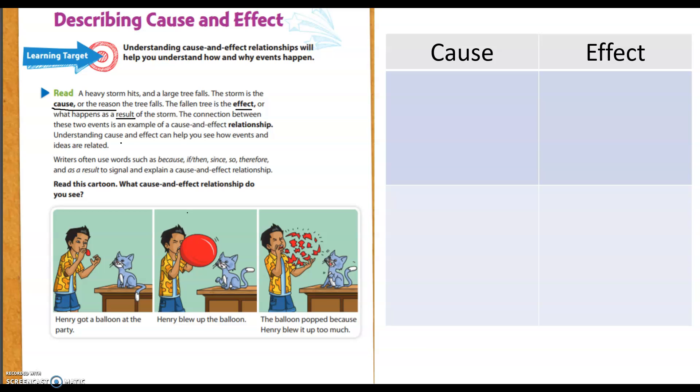Writers often use words such as because, if, then, since, so, therefore, and as a result to signal and explain a cause and effect relationship. So as we're reading this week, we're going to be looking for some of those words.